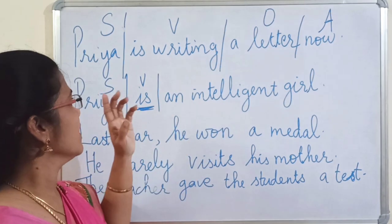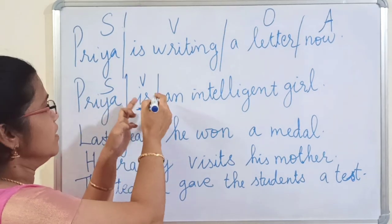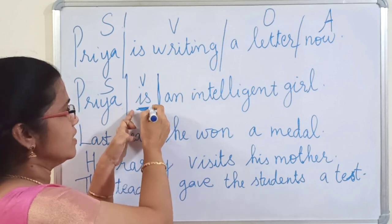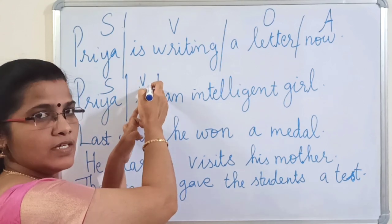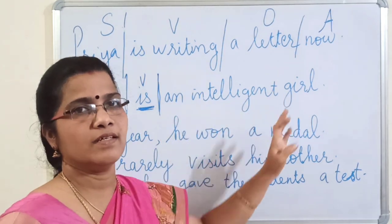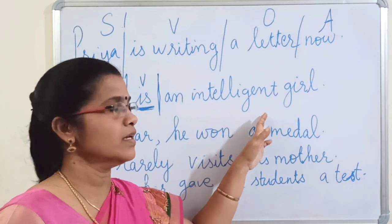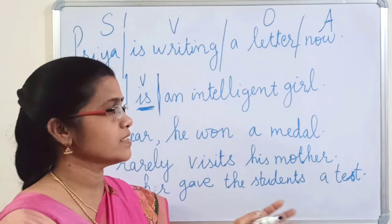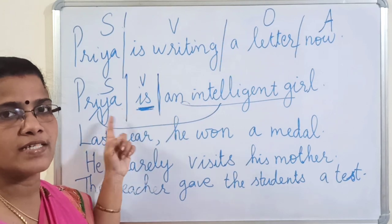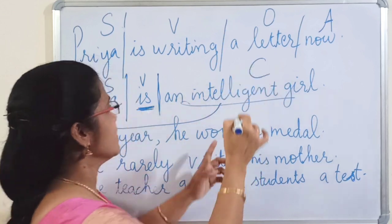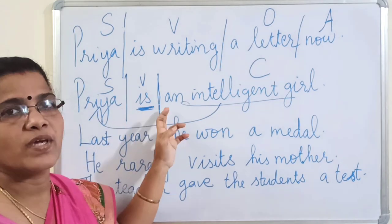Second sentence: 'Priya is an intelligent girl.' Priya is the subject; 'is' is an auxiliary verb — the verb. 'An intelligent girl' comes together as a phrase — you cannot separate it into three elements. It speaks about Priya the subject, so it is a subject complement. The pattern is S-V-C.